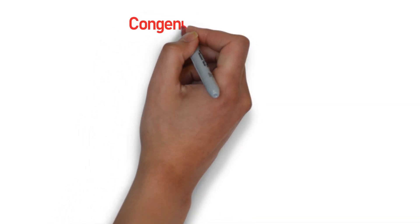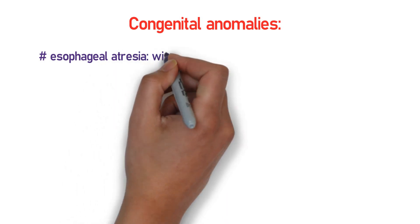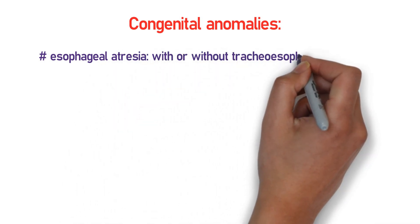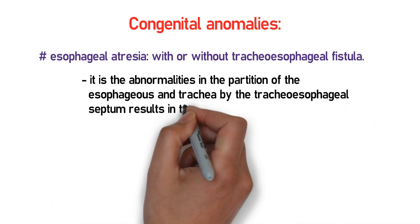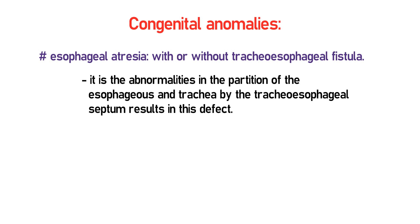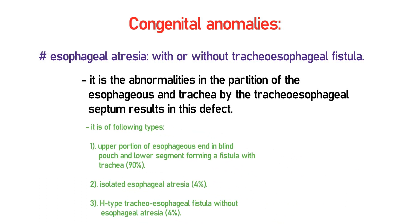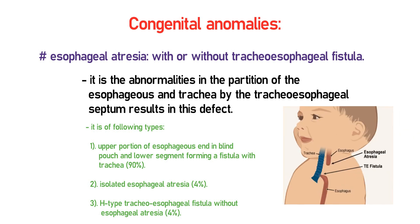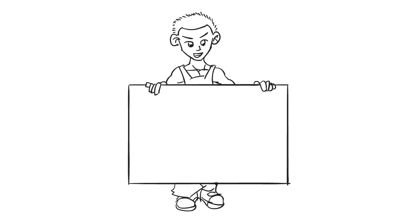A common congenital anomaly is esophageal atresia, with or without tracheoesophageal fistula. It results from abnormal partitioning of the esophagus and trachea by the tracheoesophageal septum. There are three main types: Type A — the upper esophagus ends in a blind pouch and the lower segment forms a fistula with the trachea (90%); isolated esophageal atresia (4%); and H-type tracheoesophageal fistula without esophageal atresia (4%).